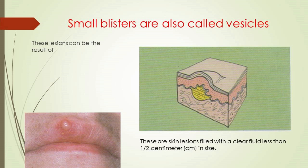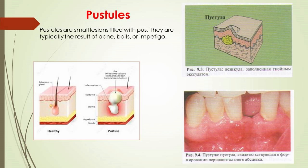Small blisters are also called vesicles. These lesions can result from sunburns, steam burns, insect bites, friction from shoes or clothes, or viral infections. They are skin lesions filled with clear fluid, less than half a centimeter in size. Pustules are small lesions filled with pus — typically the result of acne, boils, or impetigo — raised lesions containing purulent material.